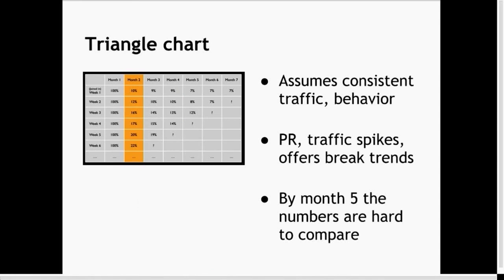Some problems with this chart: first, it assumes consistent traffic and behavior — that people come to your site in the same numbers, are the same kind of people who convert at the same rate and are retained the same way. If you have any PR traffic spikes or give people coupons, you're going to break all these trends and it'll just look like a triangle of noise. By month five the numbers are really not useful anymore. And for startups especially, if you're being scrappy and doing new things every few weeks, or you pivoted, this triangle chart is not going to work for you.